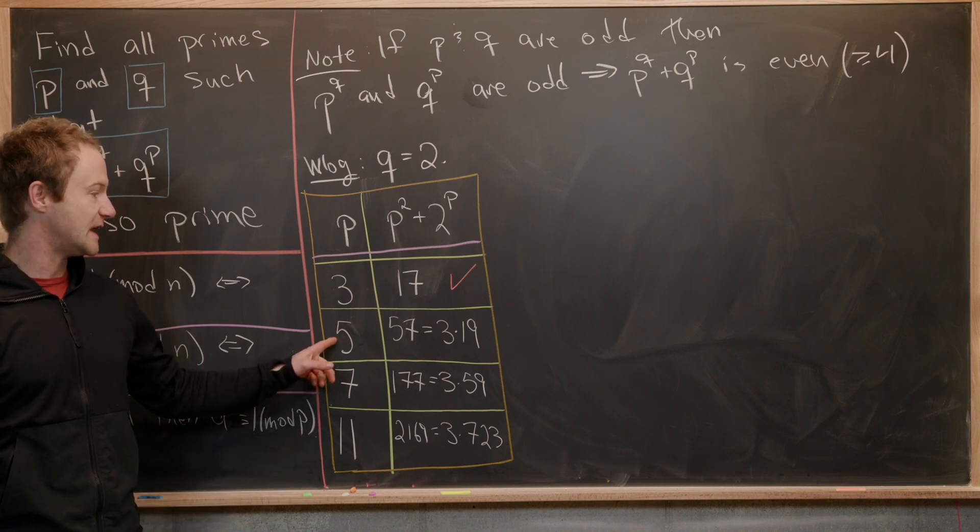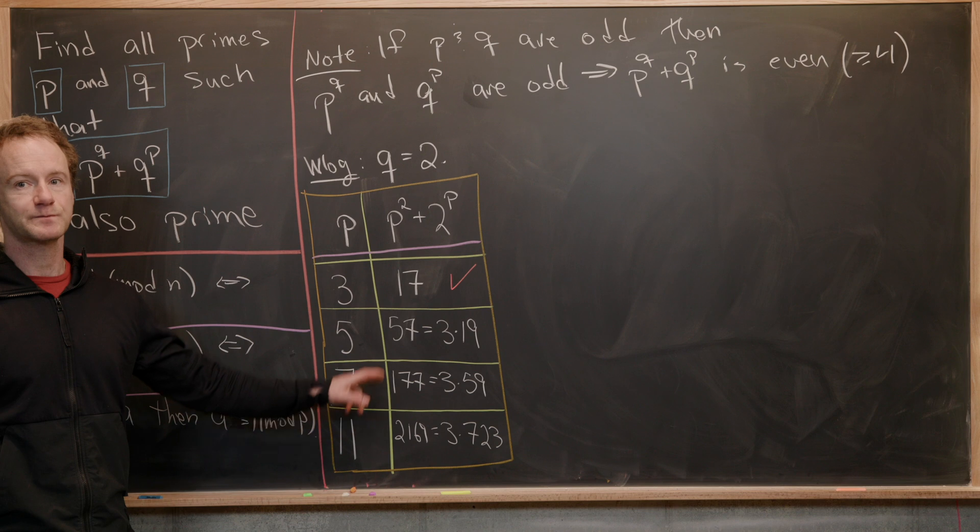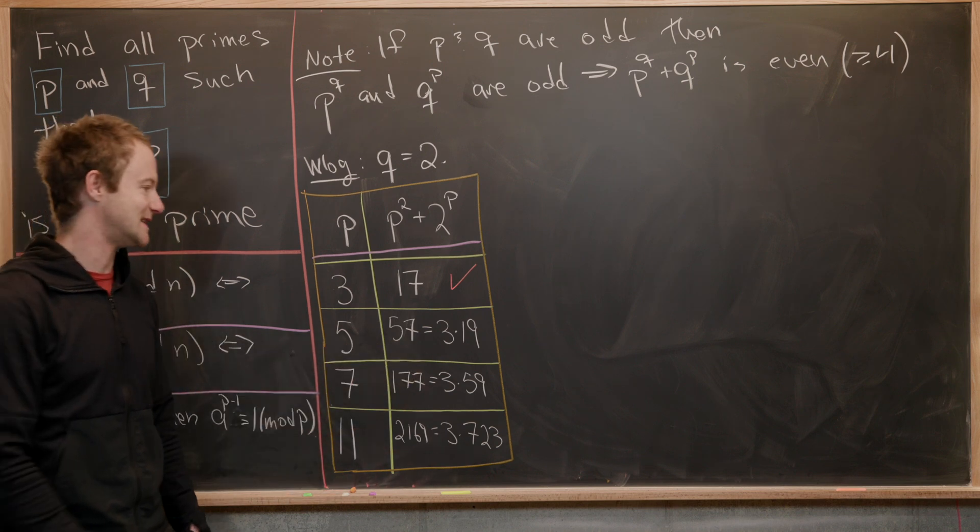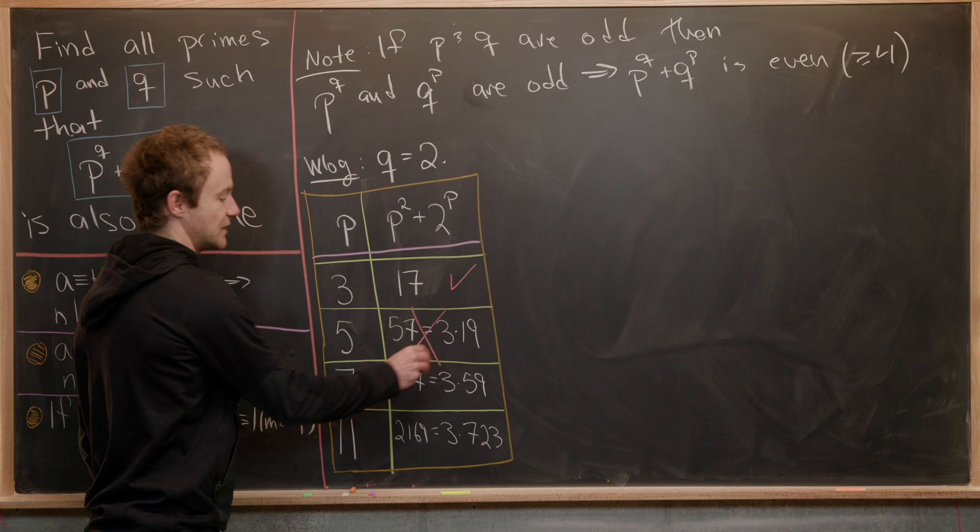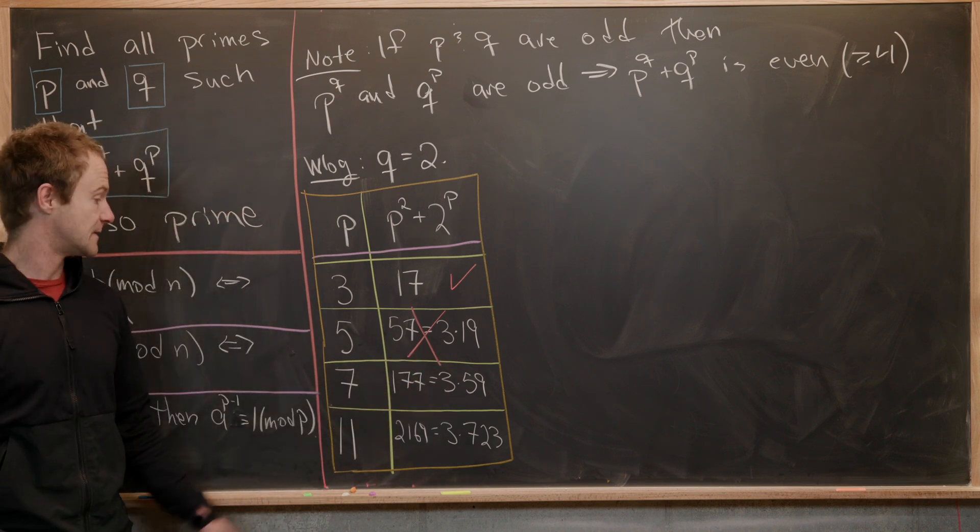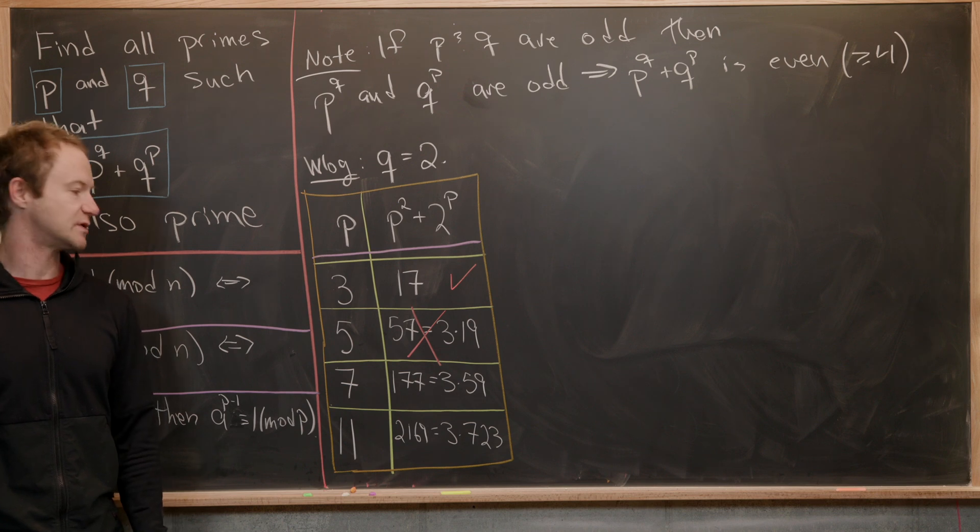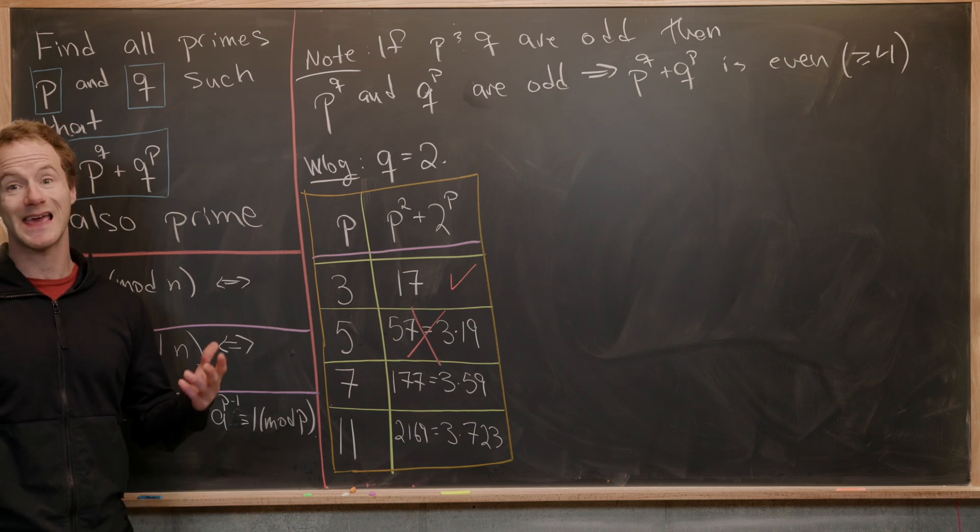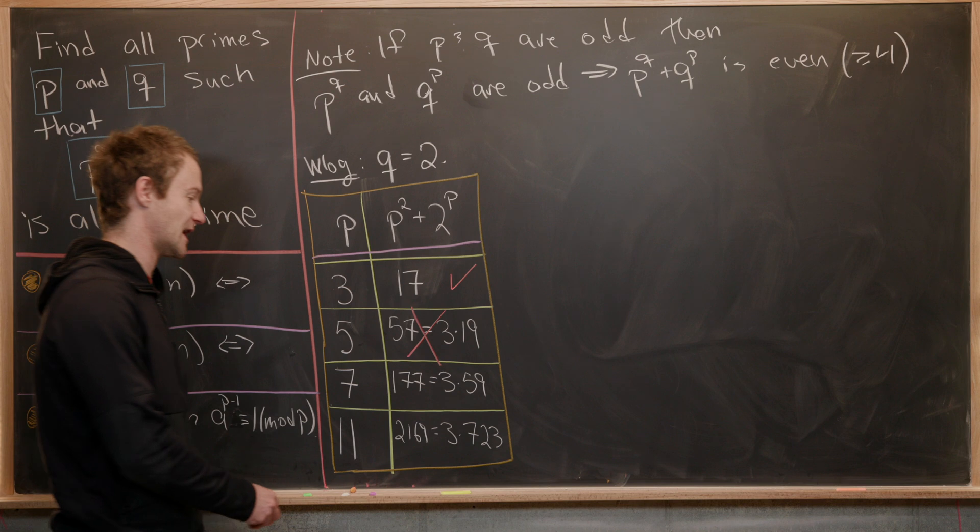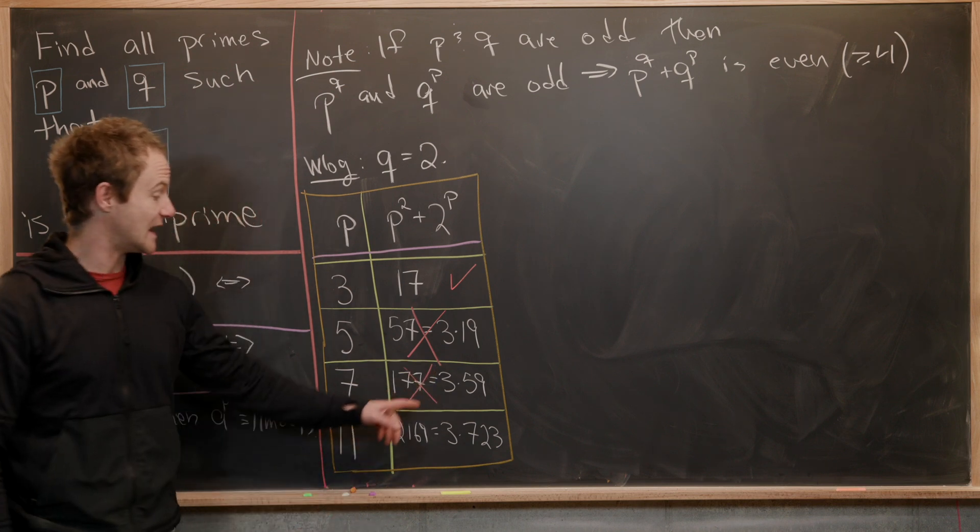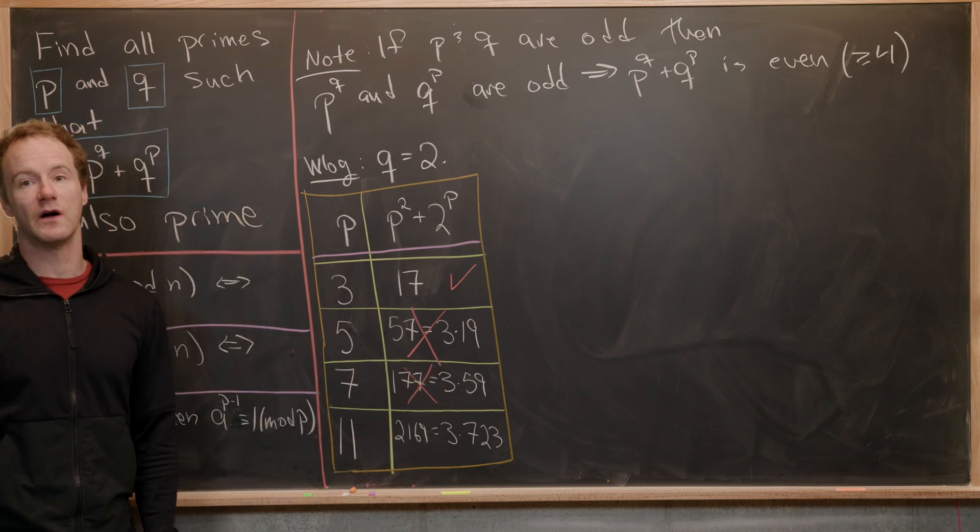And then if p is five, which is the next prime, we get 57, which is three times 19. So that's no good. Notice that it's a multiple of three. If we plug in p equals seven, we get 177, which is three times 59. Again, that is not a prime, so that is no good. And interestingly enough, we get a multiple of three again.